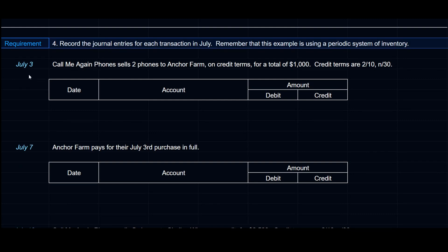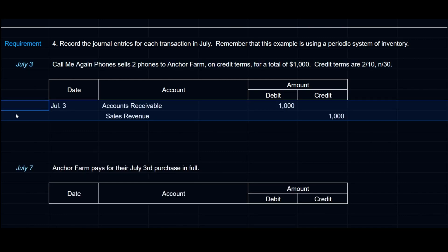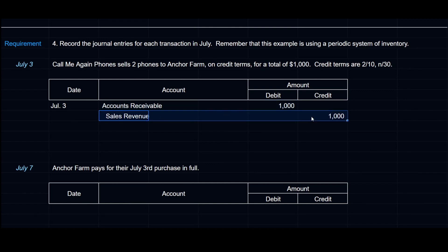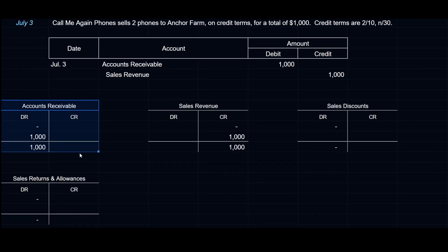Requirement 4 is to record entries for the month of July using a periodic system for sales transactions. On July 3rd, CallMeAgainPhones sells 2 phones to Anchor Farm on credit for $1,000 with terms 2/10 net 30. We debit Accounts Receivable $1,000 and credit Sales Revenue $1,000. In a perpetual system, a secondary entry would recognize cost of goods sold and credit Inventory — but in a periodic system, all inventory accounting happens at the end of the period. Accounts receivable is $1,000 and Sales Revenue is $1,000.